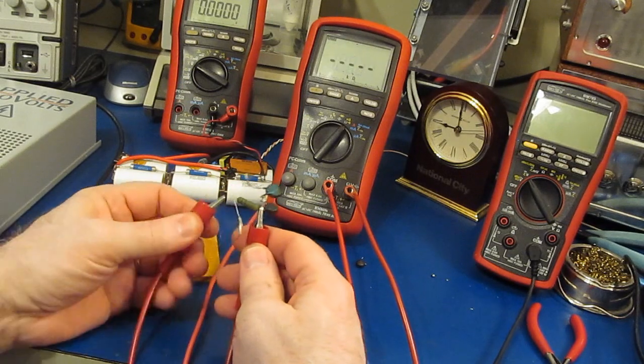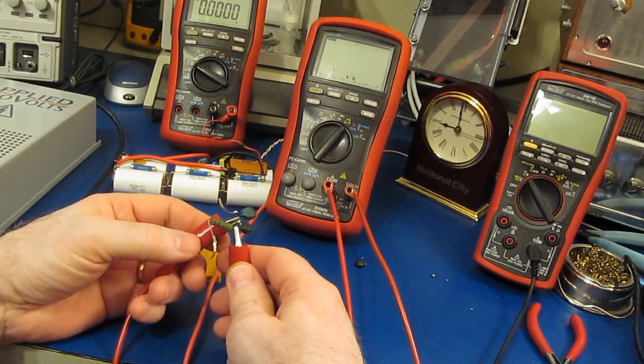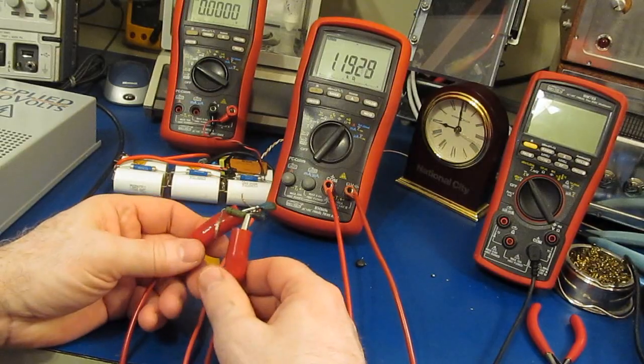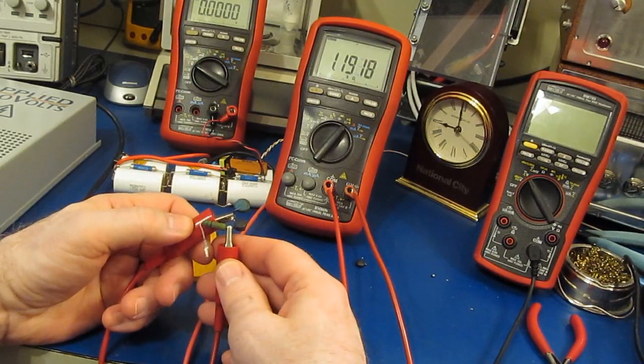So we haven't degraded the resistor at all. The PTC is probably okay. You can see now 1.19. I'll come back and check it later.